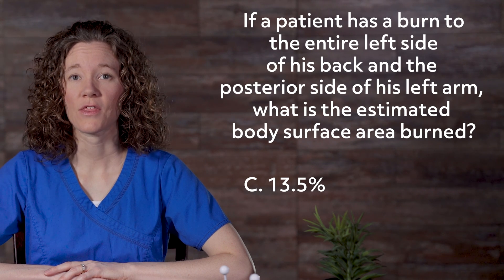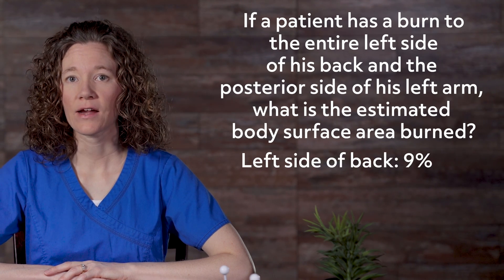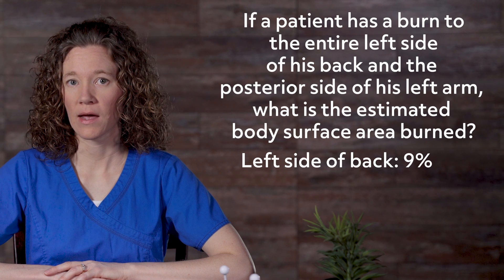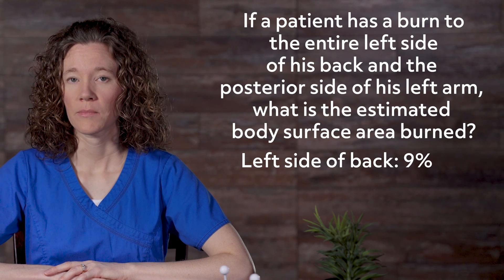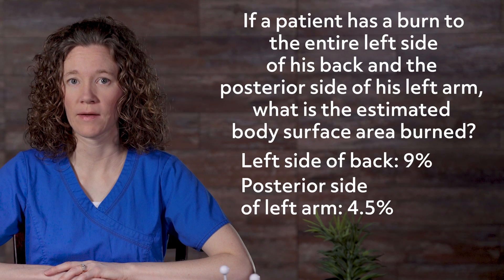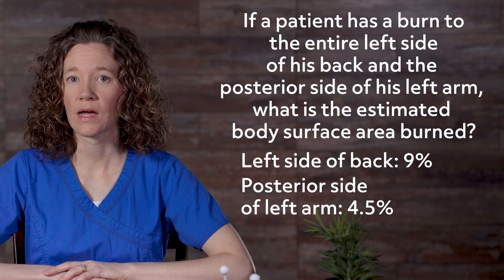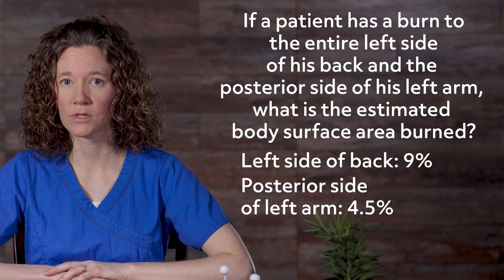If you chose c) 13.5%, you're correct. The entire left side of the back makes up 9%, plus the posterior side of the left arm is 4.5%. If it was his entire arm, anterior and posterior, then it would be 9% for the entire left arm. In this case, it was just one side of the arm, so it's 4.5%.